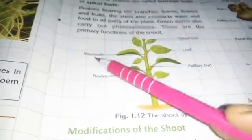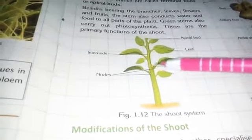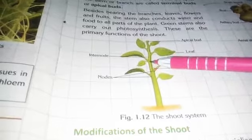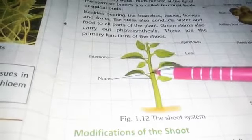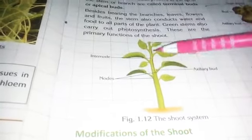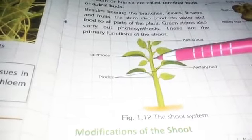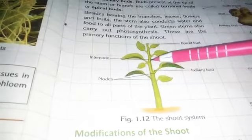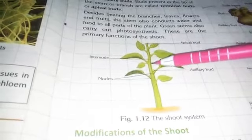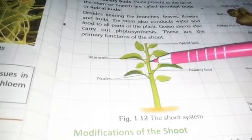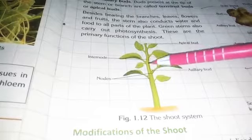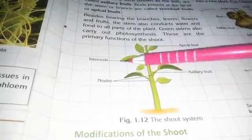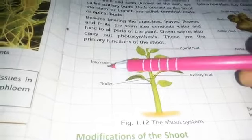The space between two nodes is called an internode. For example, here is one node and here is another node, so the space between these two nodes is called the internode. In the same way, every space between consecutive nodes is an internode.